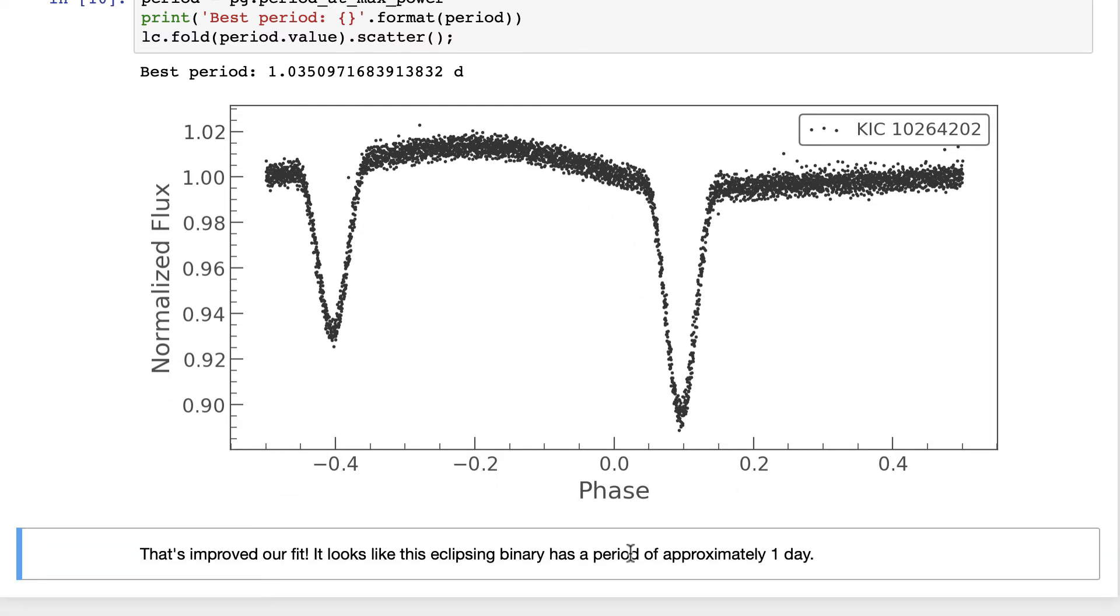So great. We find a period of this object that's pretty precise. And indeed, we see that this must be an eclipsing binary.